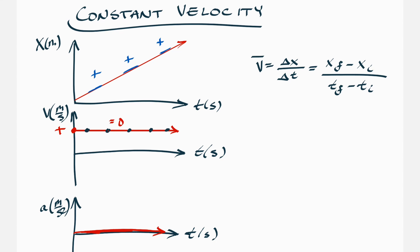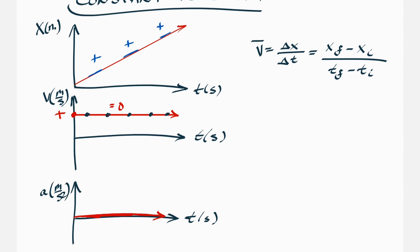One key equation to keep in mind: x final equals x initial plus velocity times time. This lets you figure out how far an object travels at constant velocity in a certain amount of time. Subtracting x initial from both sides gives delta x equals v times t.